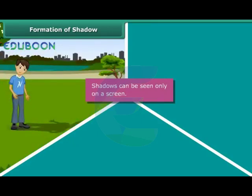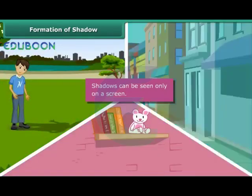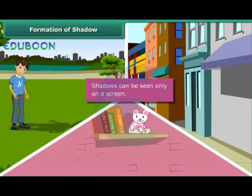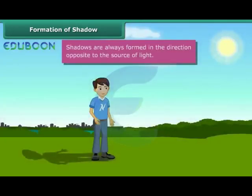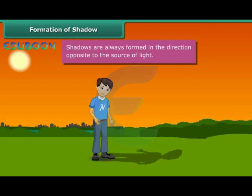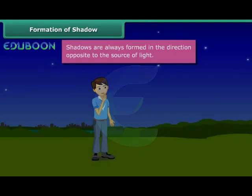Shadows can be seen only on a screen. The ground, walls of a room, buildings and other such surfaces act as screens for shadows. Shadows are always formed in the direction opposite to the source of light. In the morning, since you were facing the sun, the shadow was behind you. In the evening, the sun was behind you, causing the shadow to be formed in front of you. When the sun sets, there was no light, and hence there were no shadows.